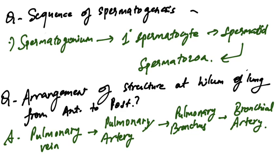The sequence of spermatogenesis: Spermatogonium, primary spermatocyte, spermatid, and then spermatozoa. Many questions were asked about sequences like these.